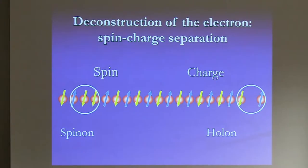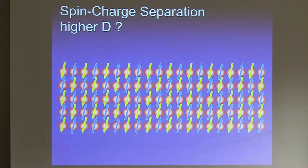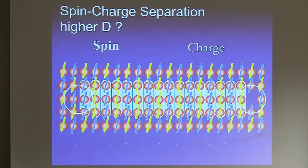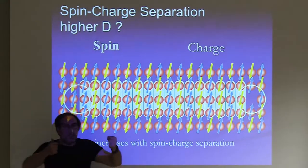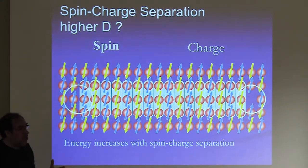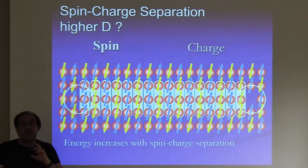This has drastic consequences for transport: if charge can separate from spin, transport is entirely dominated by what the holons do, not the spinons. In higher dimensions this deconfinement does not occur. If you draw multiple chains, the region between a spinon and holon has wrongly ordered spins, creating an energy cost that grows with their separation — they are confined by a strong spring, forming a bound state. That bound state is your original quasi-particle. This deconfinement does not occur in higher dimensions.